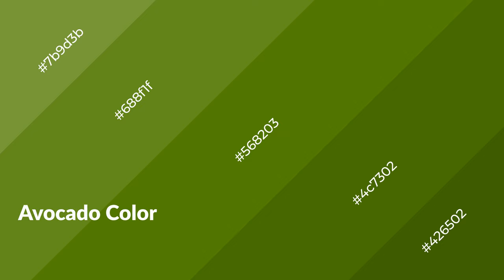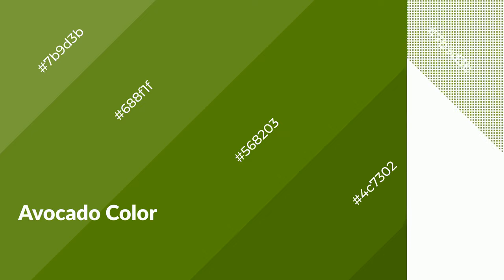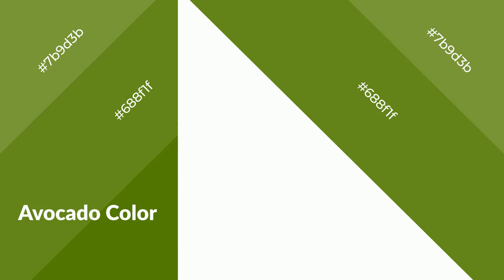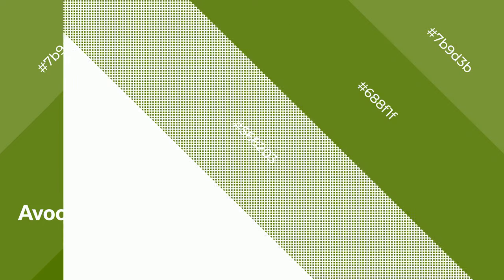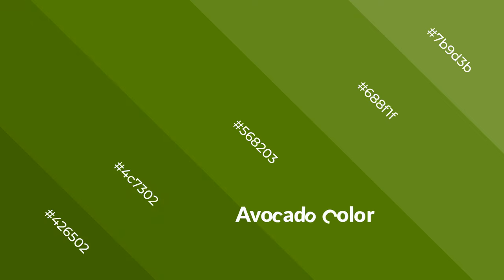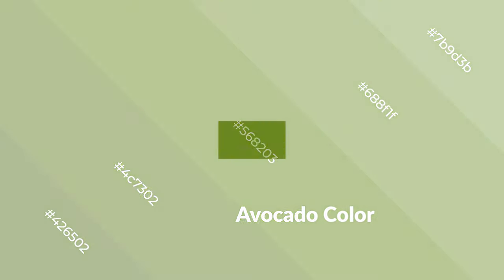Avocado is a warm color and it emits cozier and active emotions. Warm colors are symbols of warmth, fire, heat, and sunshine. It also evokes joy, passion, love, and even anger. You can see them used in restaurants and gyms.